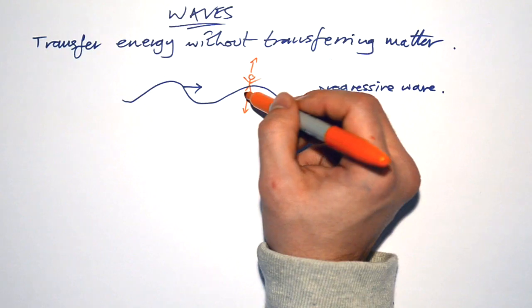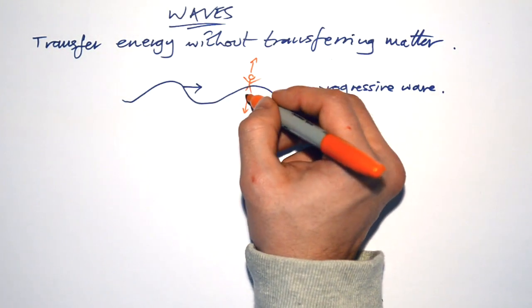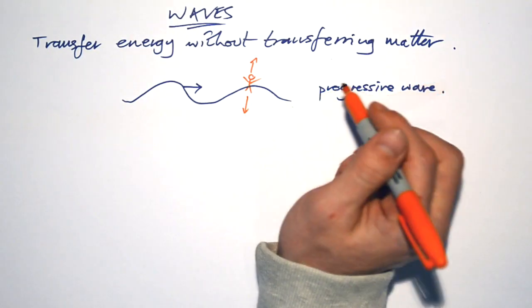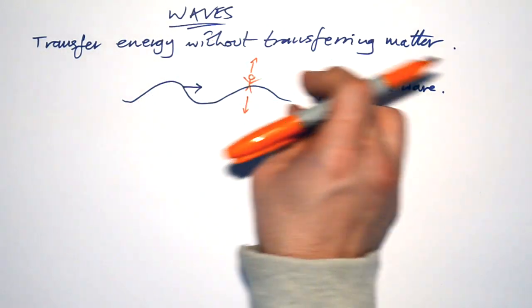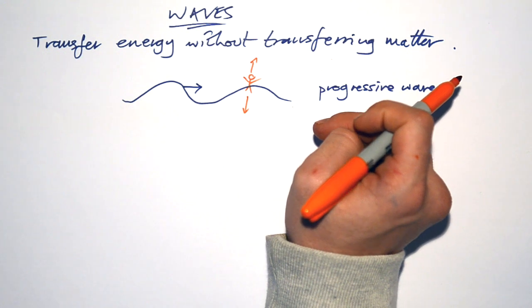But the water itself is not moving. It's just the wave is moving. If the water moved as well, you would move as well, but you're just going up and down. So that's what we mean by it transfers energy without transferring matter. The water is not moving to the right, just the oscillations or the vibrations are.